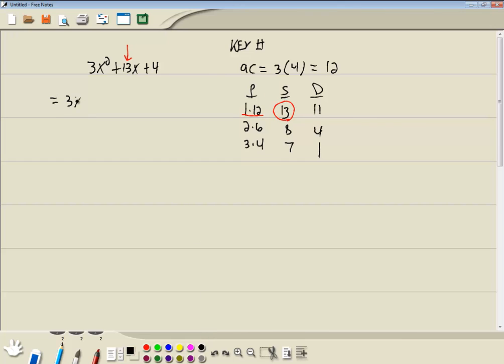So we're going to rewrite our middle term using those two numbers. The larger number in the P column that we're using, which is 12, will always be the same sign as the middle term, which in this case is positive. So we got +12x.